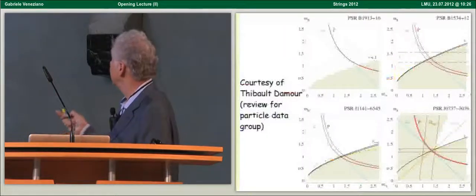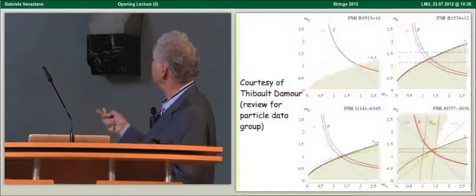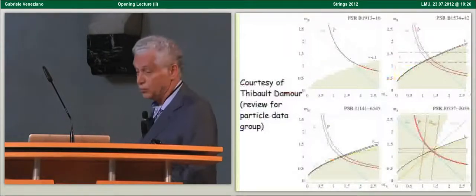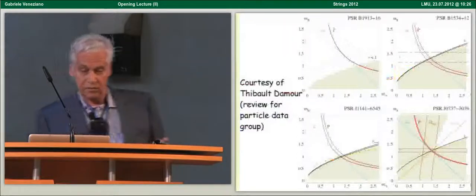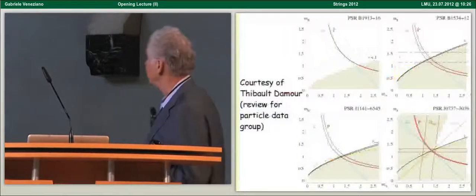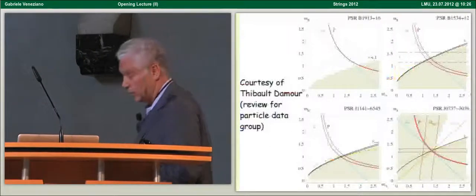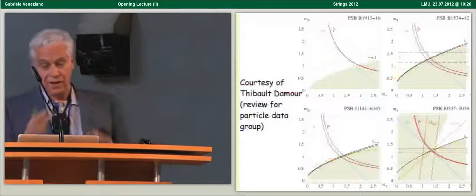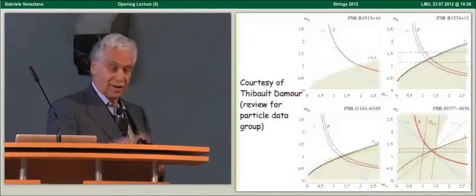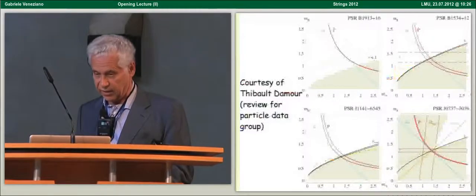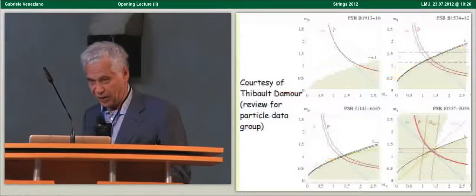We have many experimental data, for instance, in this binary pulsar, as a function of the two masses of the two companion stars. We can plot several observables. There are seven of them, and the fact that they all cross around the same point in this plane indicates that GR is correct.